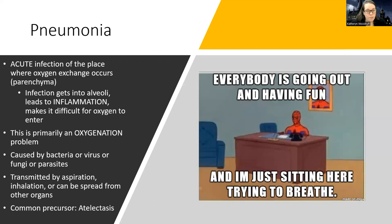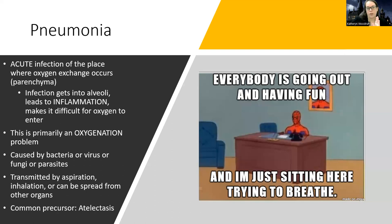People can also get aspiration pneumonia, where they can't handle their secretions very well, and food particles or gastric contents move backward in the esophagus to the bridge between the trachea and esophagus. They end up aspirating, which means gastric contents or food go from the food tube into the airway. Once that material gets in the lungs, it's not meant to be there — the lungs are meant to be sterile — and bacteria can breed on that food. Infection can also spread from other organs into the lungs. A common precursor is atelectasis, which we'll discuss shortly.